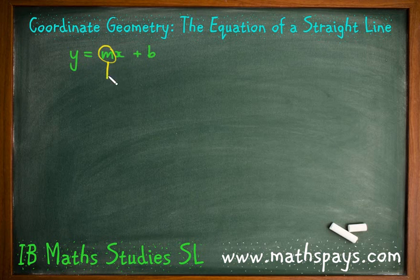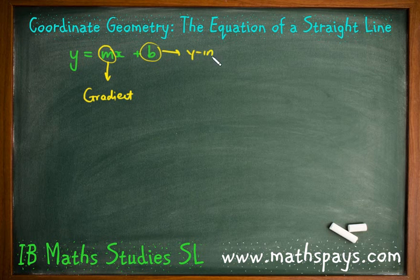We hopefully remember what the m is. The m represents the gradient. And the b represents the y-intercept. Now I'll be going through this graphically in a moment using Desmos to show you the difference between the m's and the b's.